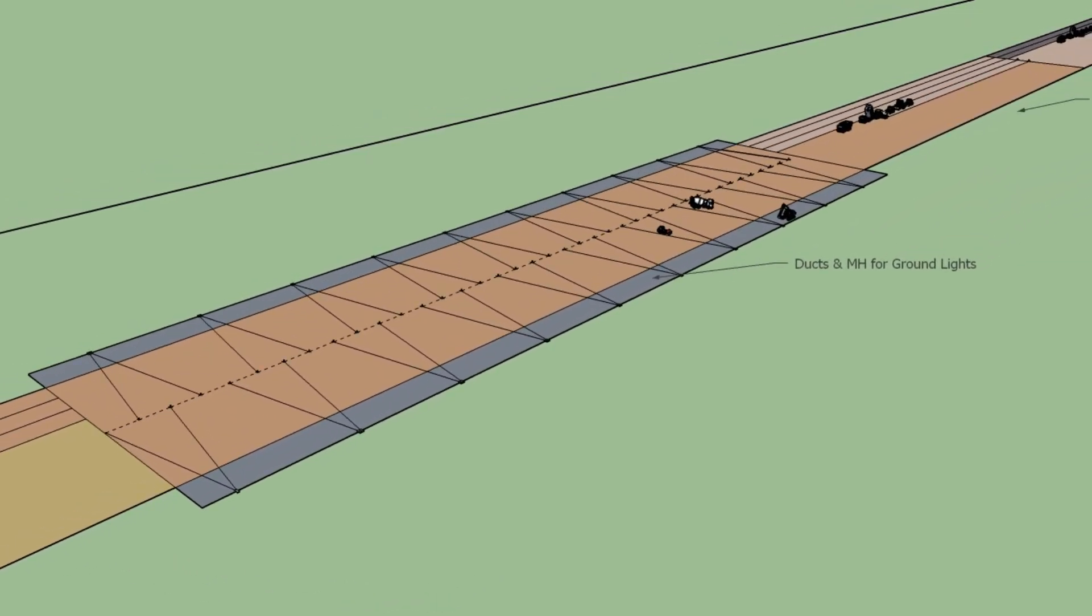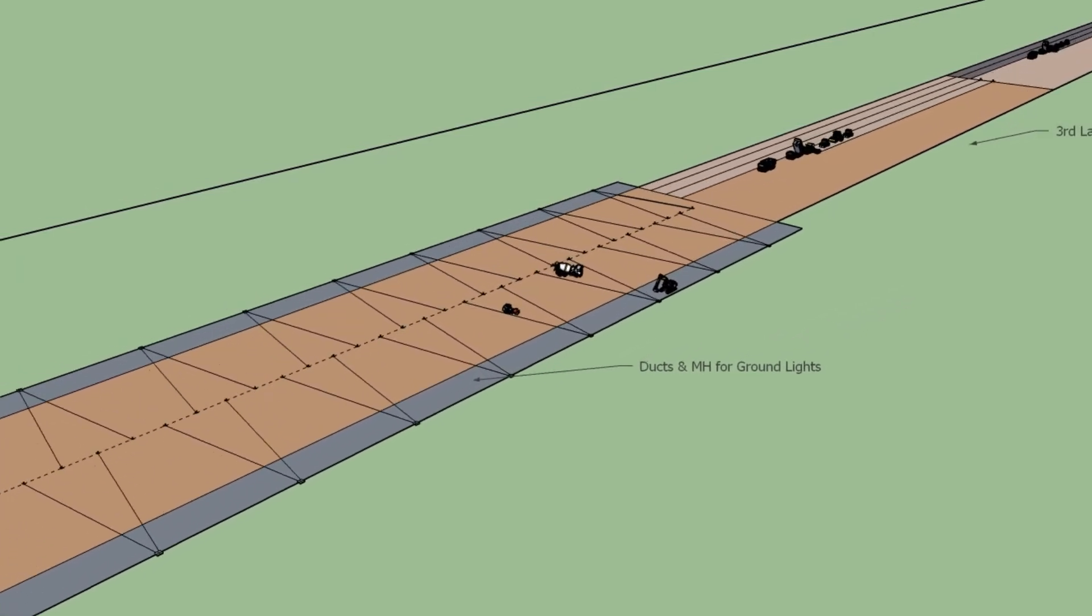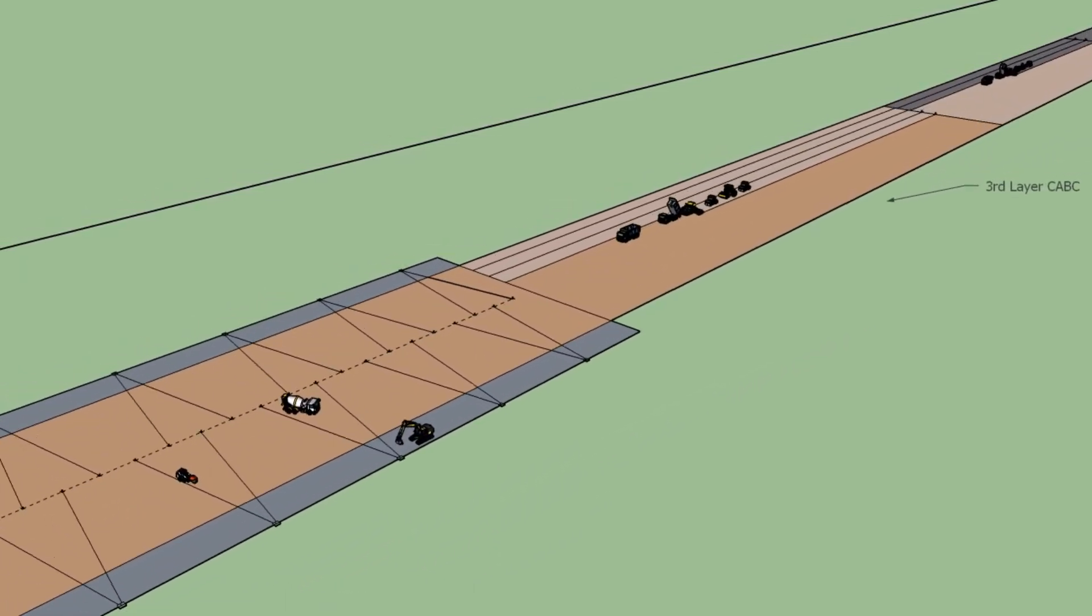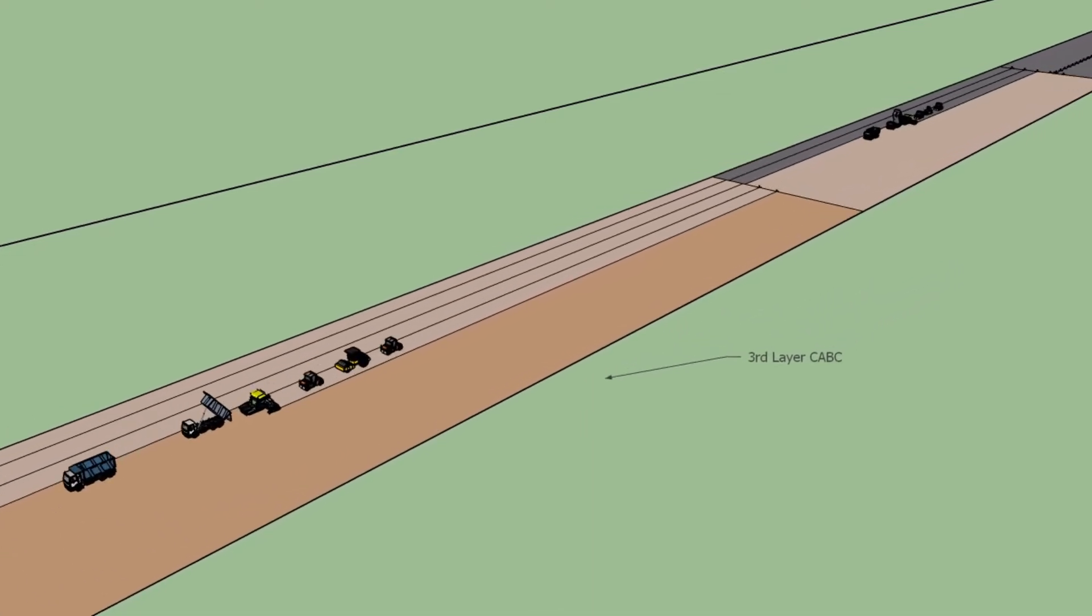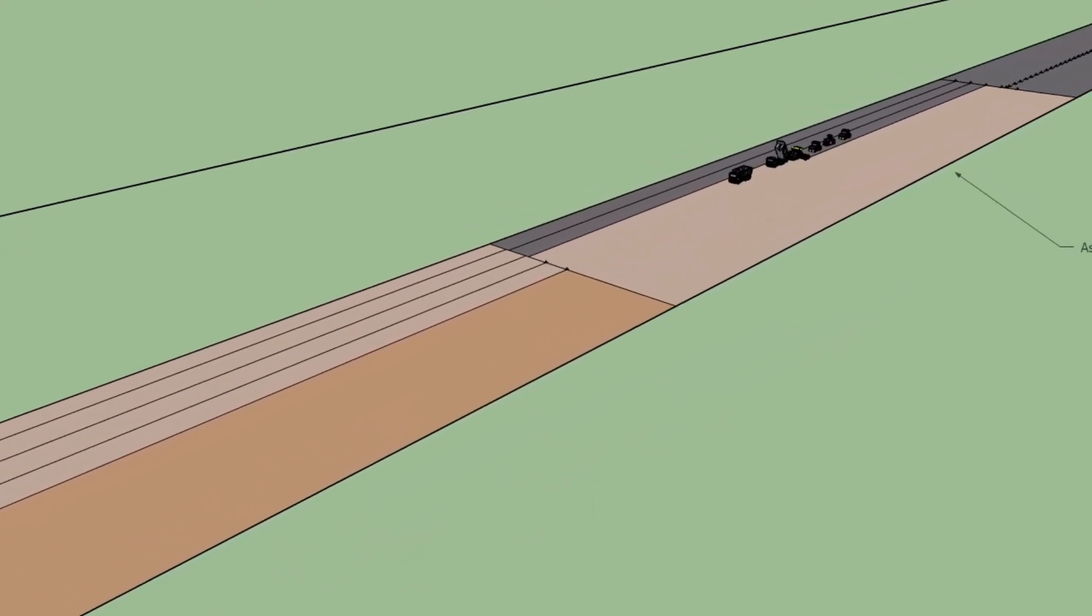Excavate and place ducts and precast concrete manholes for the ground lights. Lay and compact the third layer of crushed aggregate base course.